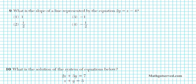Let's take a look at number 9. We need to find the slope of a line represented by the equation 2y equals x minus 4. What form is this? It's not standard form, general form, or slope-intercept form — it matches none of them. It's very close to slope-intercept form. Remember, slope-intercept form is y equals mx plus b. The difference is this equation has a coefficient of 2 in front of y, which is unacceptable for slope-intercept form — y must be alone.